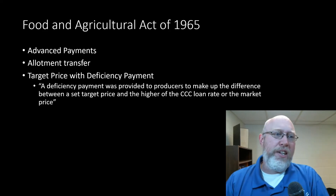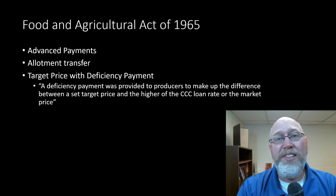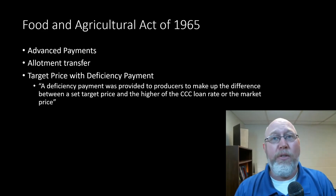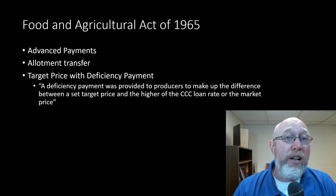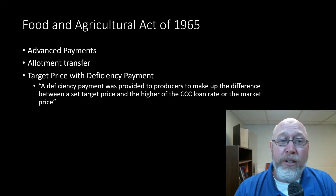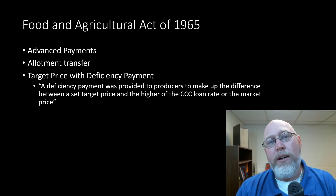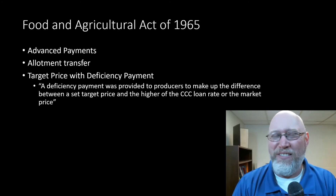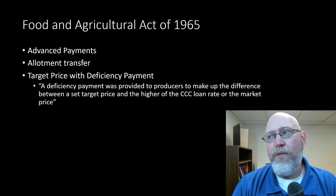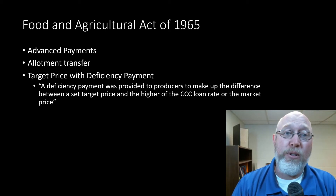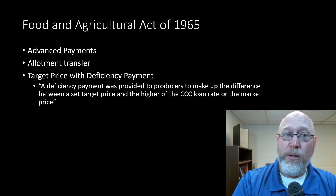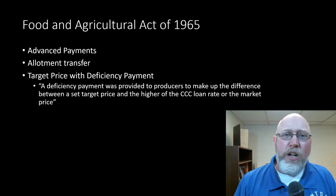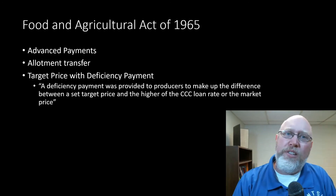The Food and Ag Act of 1965 saw a couple of things of interest. The first is the idea of an advanced payment. The way most farmers operate is they borrow money on an operating loan at the beginning of the crop year, plant their crop, and then when they harvest they sell the crop and pay off their loans. The 1965 Food and Ag Act had a provision for advanced payments where a farmer could get their government support when they planted their crop instead of when they harvested it.